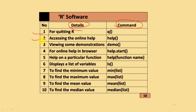R software commands: To quit R, use q(). For help, use the help option. To view demonstrations, use the demo command. For online help in the browser, go to help.start(). For help on a particular function, write help() with the function name in brackets. To display a list of variables, use ls(). To find the minimum value, use min() with the list. To find the maximum value, use max() with the list. To find the median, use the median command.